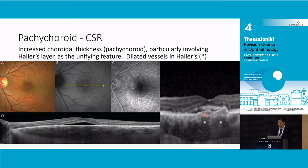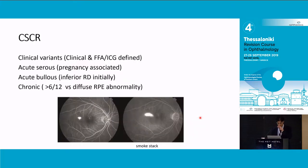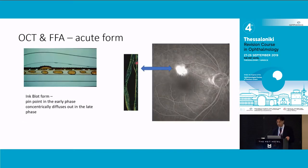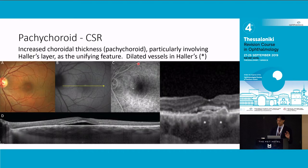Now this is where you need to be careful. You have elevation of the RPE separating Bruch's membrane - some people call it a double-layer sign, but I would just say it's a separation of RPE and Bruch's membrane. I showed earlier that could be the focal point of where the leak is. However, now that we've got angio-OCT, we now realize - especially if it's parafoveal or under the fovea - this could be a type 1 CNV as well.